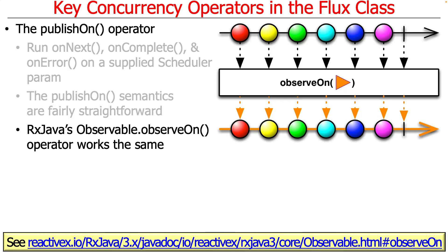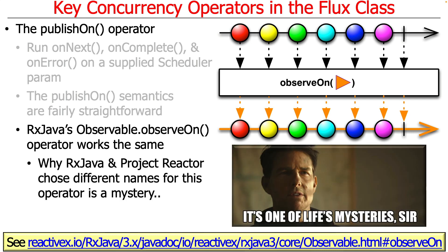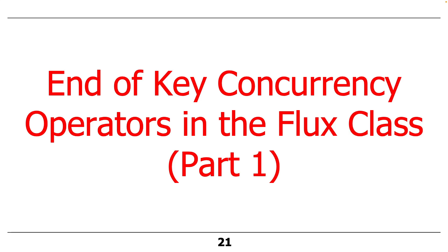RxJava has something called observeOn that works the same as publishOn — why they chose different names is one of life's mysteries, to paraphrase Tom Cruise from Top Gun: Maverick. So that's the end of the overview of concurrency operators. You will need to understand concurrency operators in order to do some of the upcoming assignments.